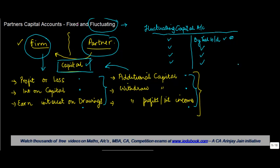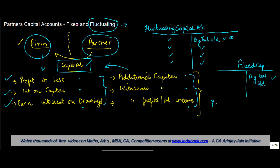Whereas in a fixed capital account situation, you have a balance brought down. All these routine entries — in terms of profit and loss, interest on capital, interest on drawings — are basically routed through a separate account called the partners current account.